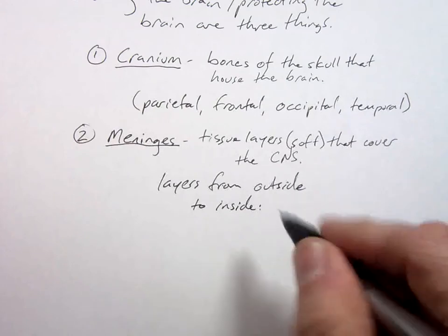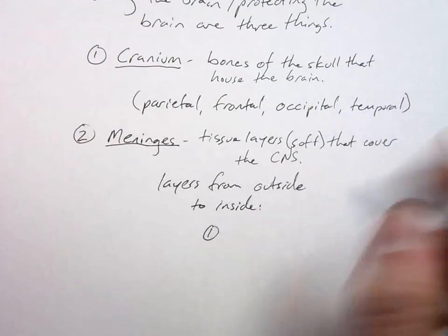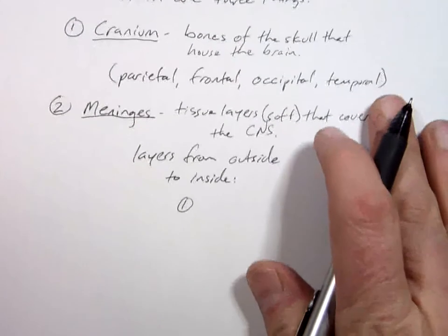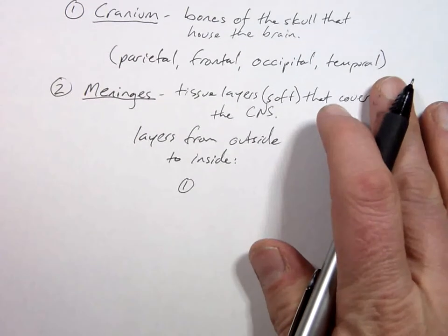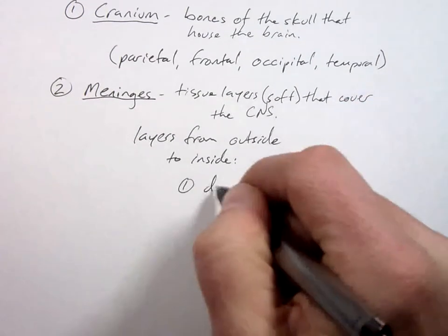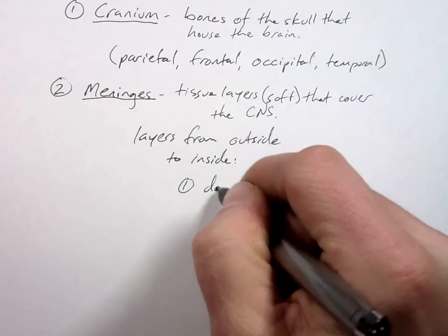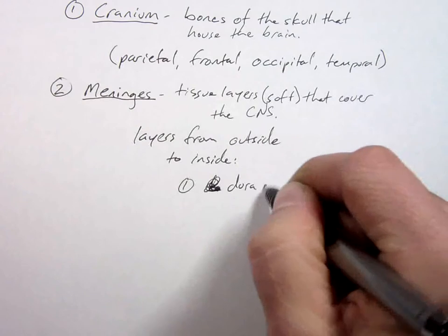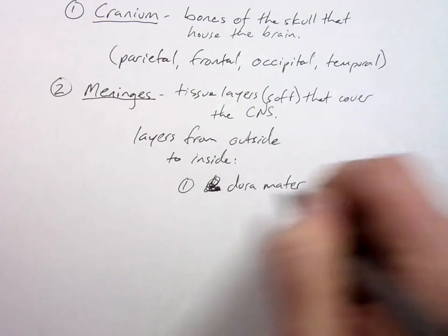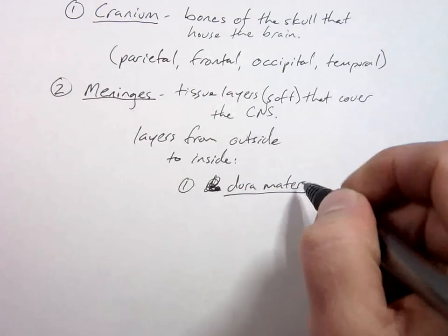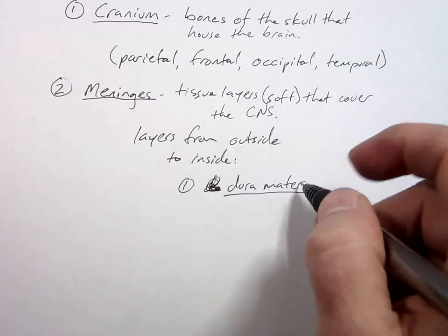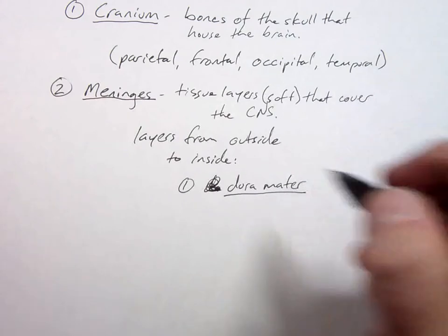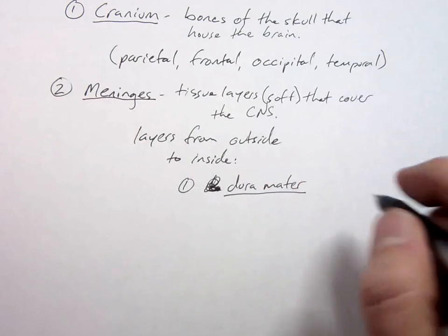First one, it's called the dura mater, D-U-R-A-M-A-T-E-R. Note that this word is not matter and it is also not pronounced mater like tomato.